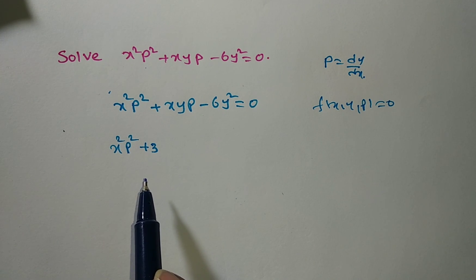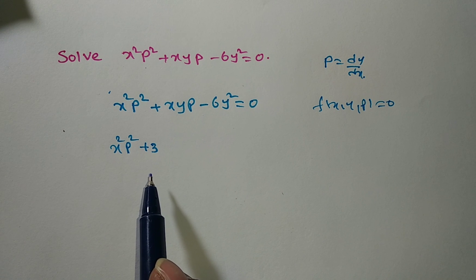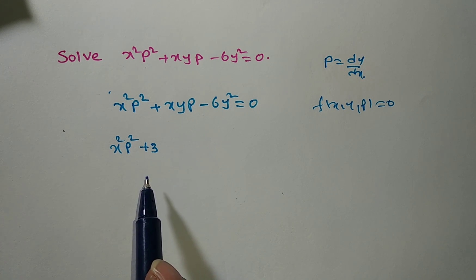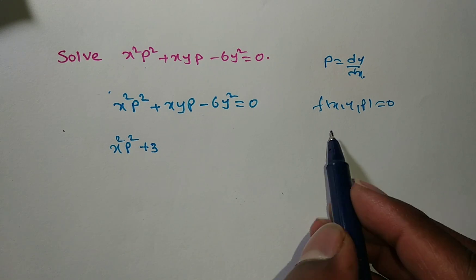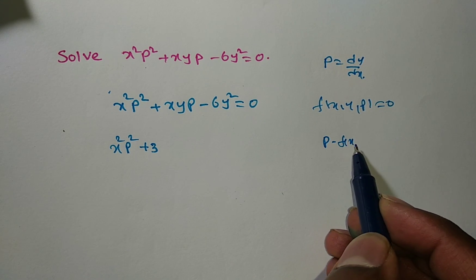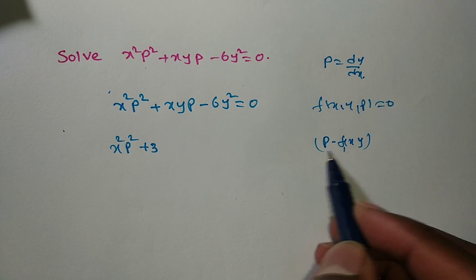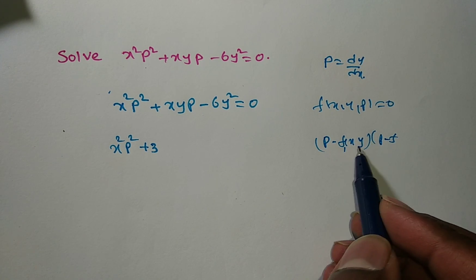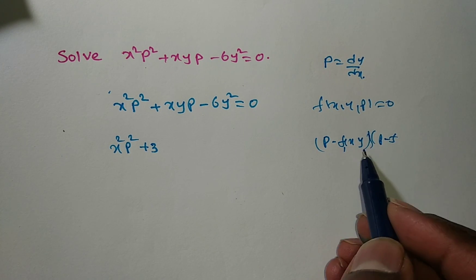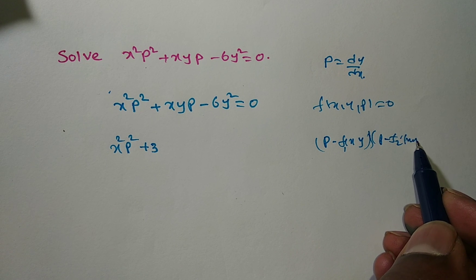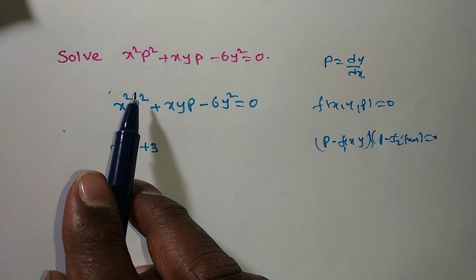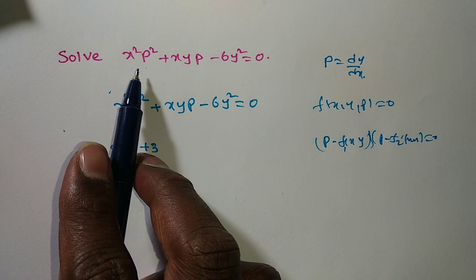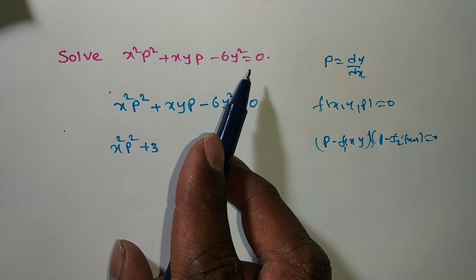To solve this problem, we have different methods. The first method checks whether it is solvable for p or not. If it is solvable for p, we write it in factored form like a p squared plus b p plus c equals zero.